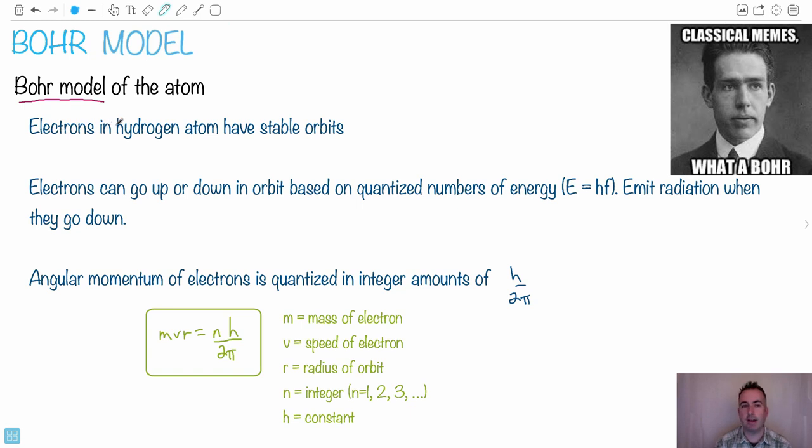The electrons in the hydrogen atom have stable orbits. So what that meant is, if you did the math before this atom, it would say that as they were just orbiting around, they should give off radiation. Therefore, their orbits should sort of degrade. His thing said, no, no, no, no, they can be stable. They can be happy where they are. No problem there.